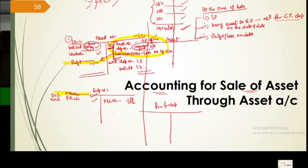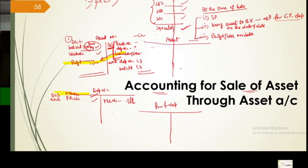Now for accounting with provision: with provision means we are preparing a separate provision account. So depreciation accumulates in provision. The asset account shows cost price only, and the provision account shows accumulated depreciation. For example, depreciation could belong to two machines. If one is sold and one remains, the remaining asset's balance should appear going forward.